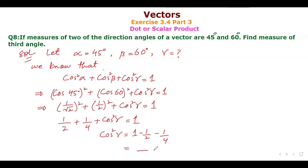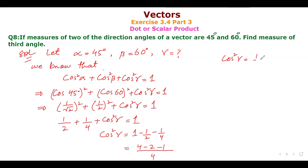Taking LCM as 4: (4 - 2 - 1)/4 = 1/4. So cos²γ = 1/4.